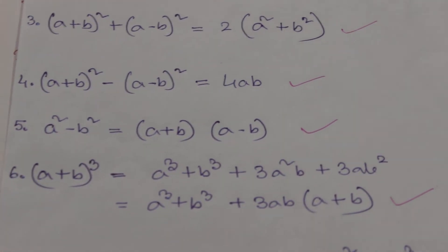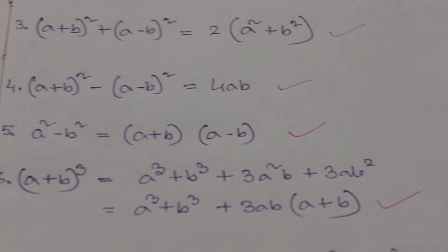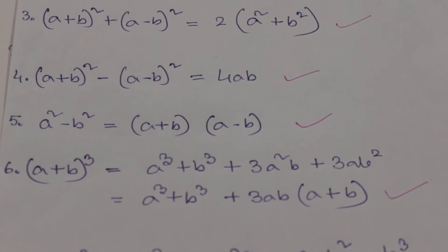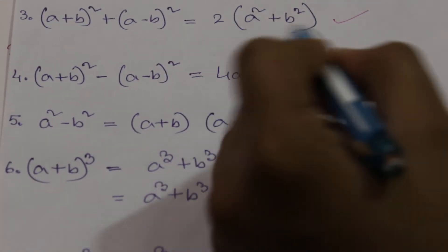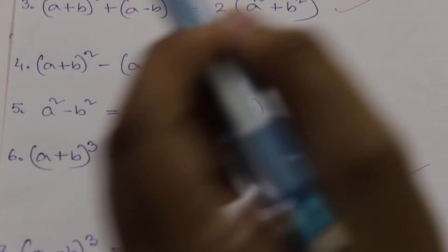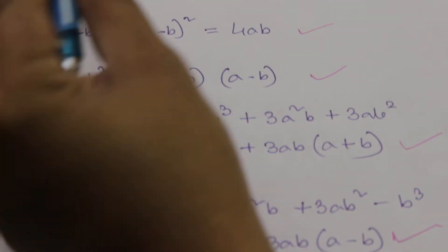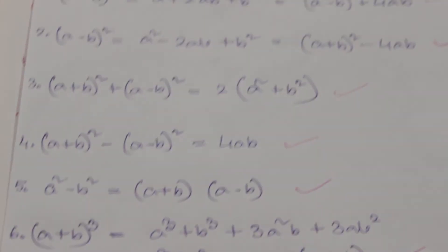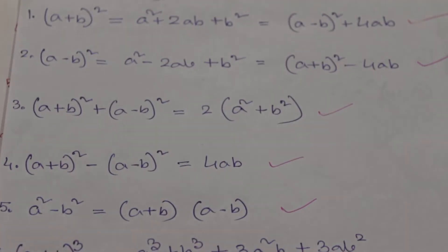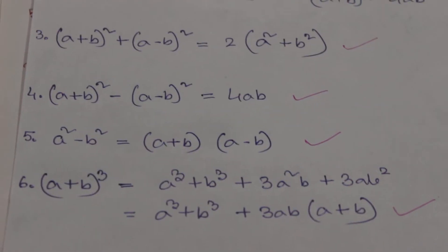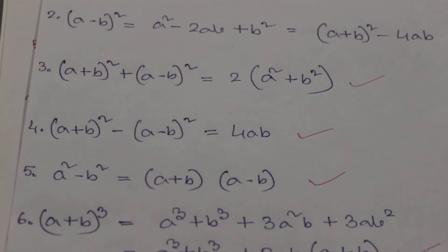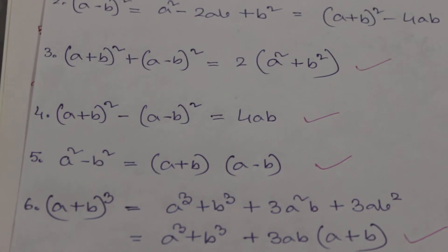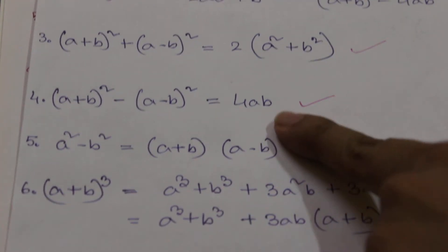If we add these two equations, we get: (a + b) whole square plus (a - b) whole square equals 2 into (a square plus b square). Similarly, if we subtract equation 1 from equation 2, we get: (a + b) whole square minus (a - b) whole square equals 4ab.